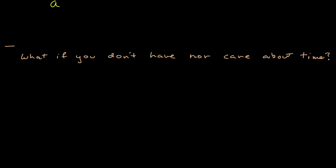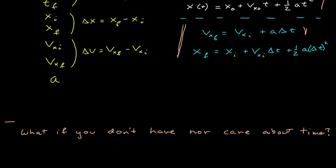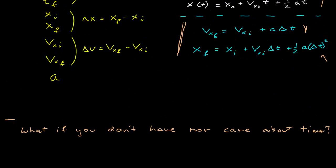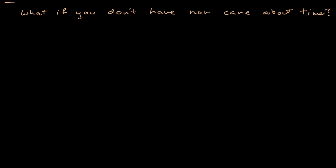And so, okay, so let's, first of all, let's solve, then, this one for that time interval, and then substitute it into that one. Okay, so solving the first one for the time interval, that delta t, then is equal to the final velocity minus the initial velocity divided by the acceleration.